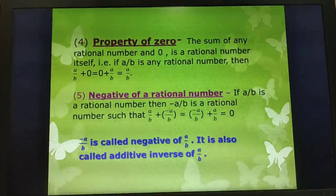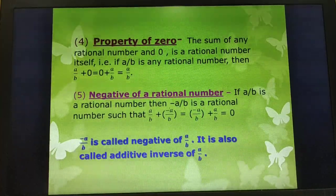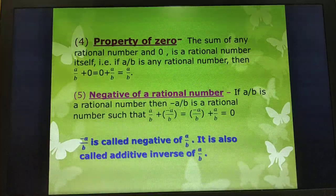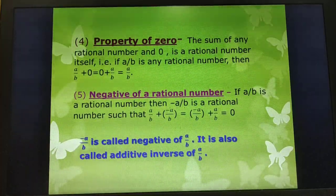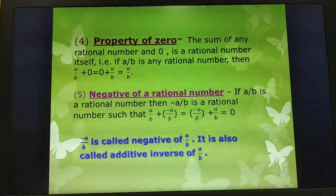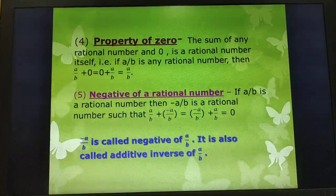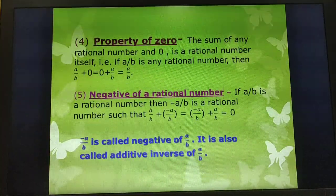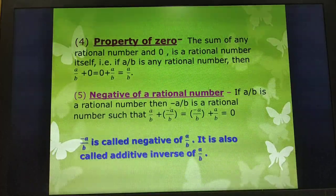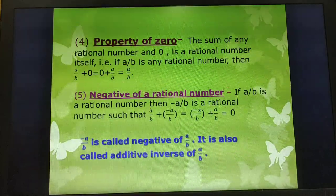Property of zero: The sum of any rational number and zero is the rational number itself. That is, if A/B is any rational number, then A/B + 0 = 0 + A/B = A/B. For example, 2 + 0 or 0 + 2, the answer will remain 2.